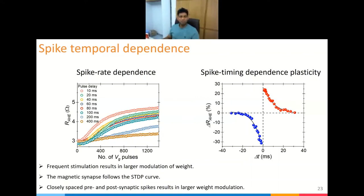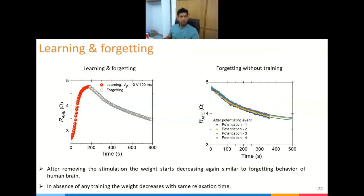We also observe spike timing dependence: if a positive and negative burst are applied close together, there is a very large change in the synapse; if they are far apart, there is almost no change. Finally, our device shows learning and forgetting behavior. If we increase the weight by applying gate voltage pulses and then stop applying pulses, the anomalous Hall resistance — the weight — gradually decreases. This is similar to the human brain: if you keep repeating something you retain a strong memory, but as soon as you stop, you gradually start to forget.